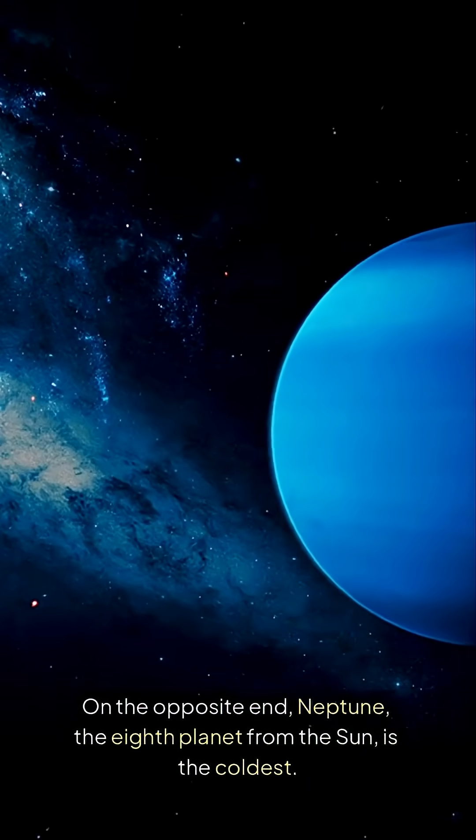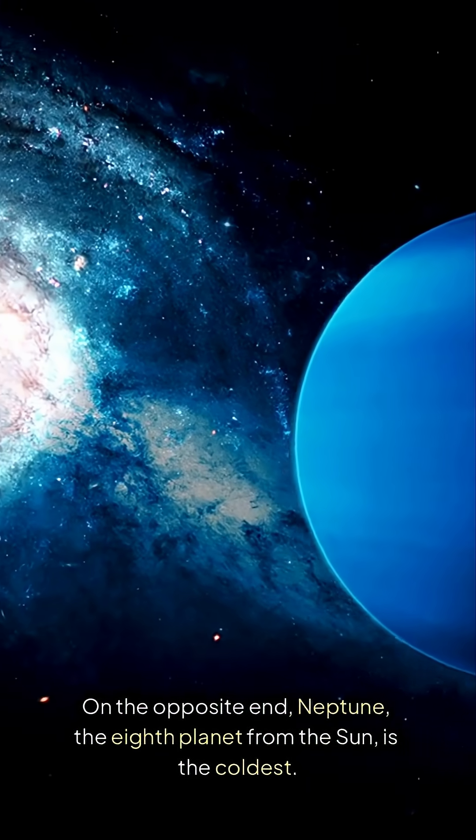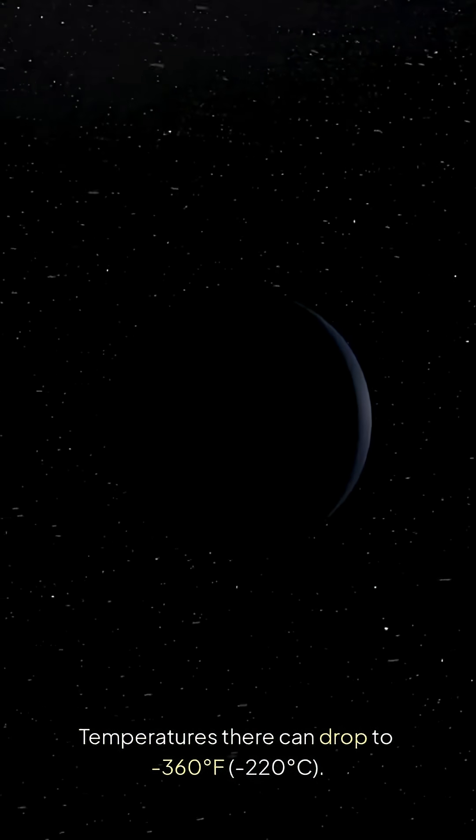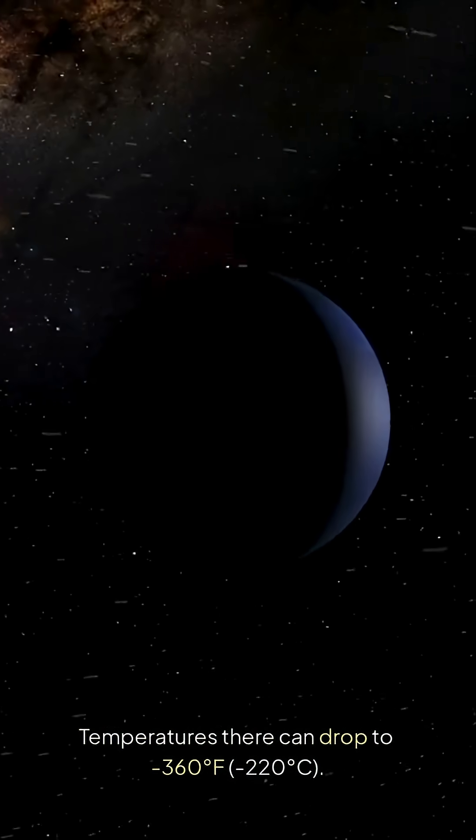On the opposite end, Neptune, the eighth planet from the Sun, is the coldest. Temperatures there can drop to 360 degrees Fahrenheit, 220 degrees Celsius.